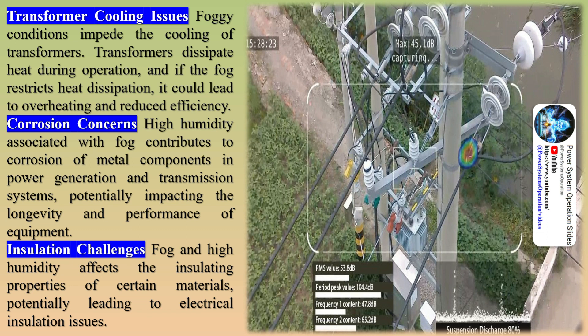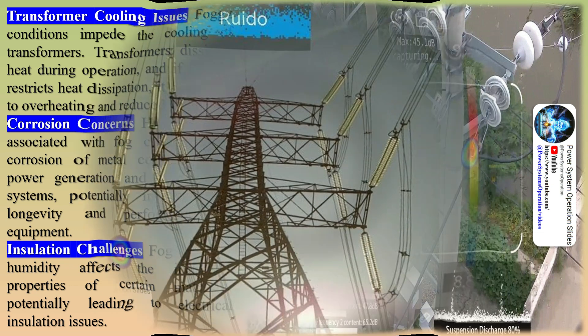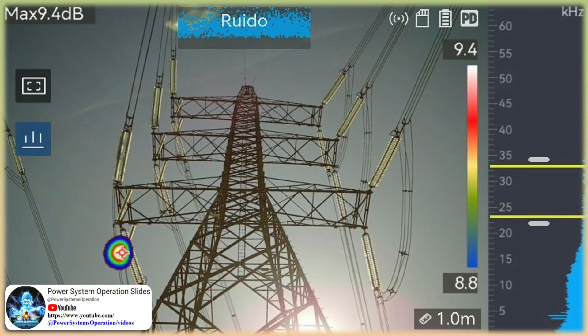Corona effect results in energy loss as it dissipates energy in the form of corona discharge, reducing the overall efficiency of power transmission. This corona discharge also produces audible noise, which is disruptive especially in residential areas. Corona discharge also results in deterioration of insulators and transmission lines over time, reducing their lifespan and increasing the frequency of maintenance. Additionally, foggy conditions impede the cooling of transformers, potentially causing overheating and reduced efficiency, while high humidity associated with fog contributes to corrosion of metal components in power generation and transmission systems.